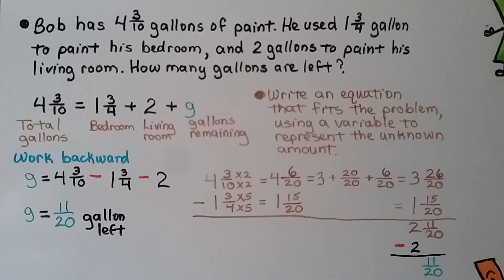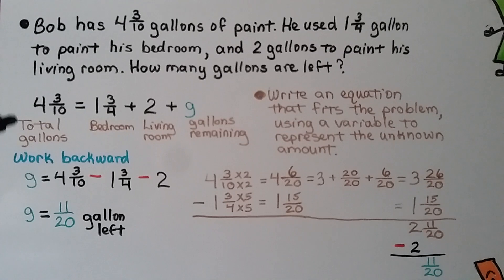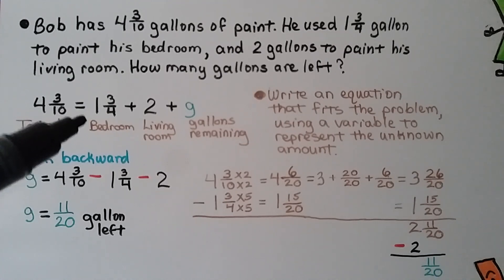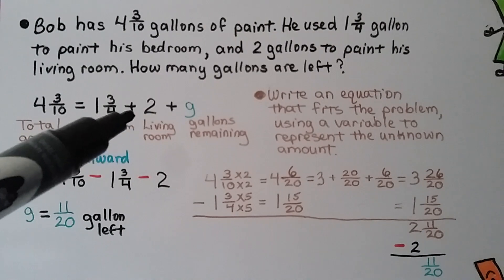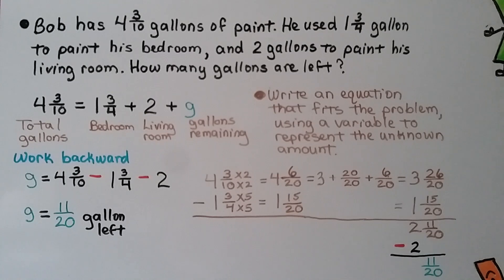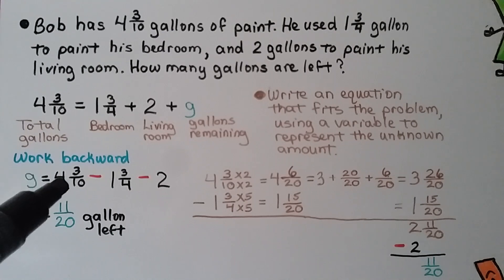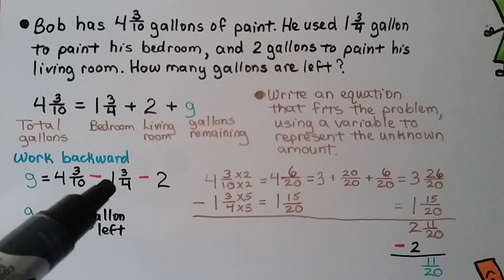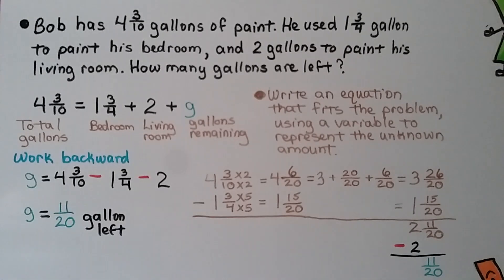Bob has 4 and 3 tenths gallons of paint. He used 1 and 3 fourths gallon to paint his bedroom and 2 gallons to paint his living room. How many gallons are left? We write an equation using a variable to represent the unknown amount. The total gallons were 4 and 3 tenths. He used 1 and 3 fourths for the bedroom and 2 gallons for the living room, so we use g for gallons remaining. To work backward: g equals 4 and 3 tenths minus 1 and 3 fourths minus 2.